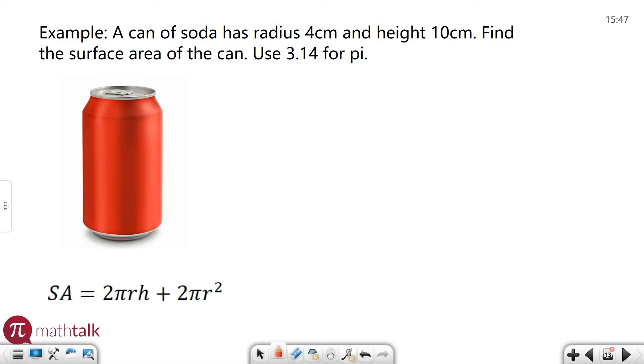A cylinder is something like a Coke can or a can of soda. It's a three-dimensional circle, basically, that's stretched out.